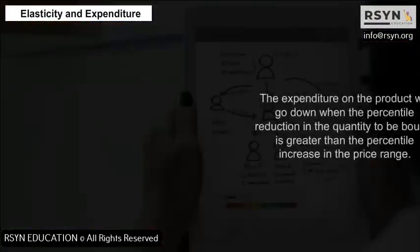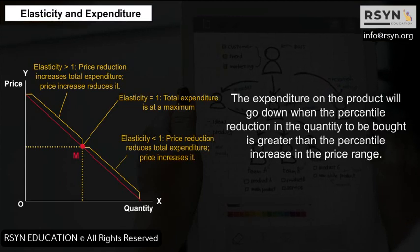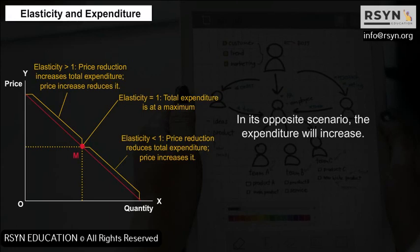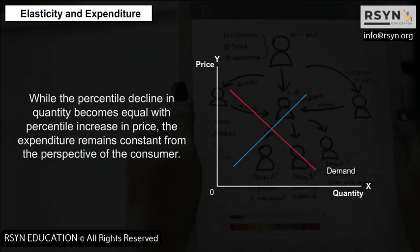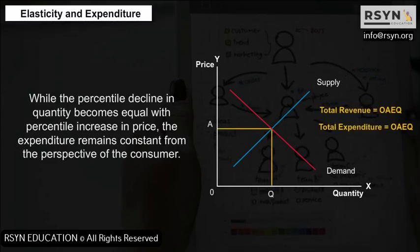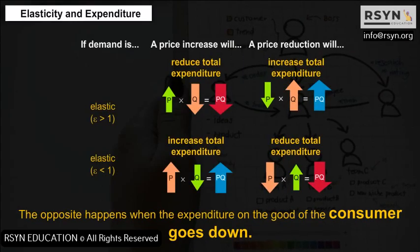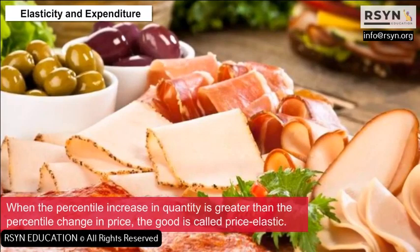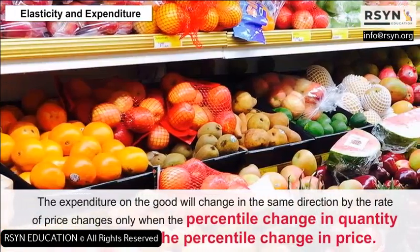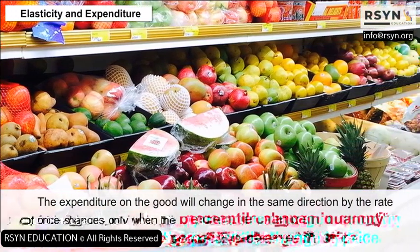Elasticity and Expenditure: Expenditure on a product will go down when the percentage reduction in quantity bought is greater than the percentage increase in price. In the opposite scenario, the expenditure will increase. When the percentage decline in quantity equals the percentage increase in price, expenditure remains constant. When the percentage increase in quantity is greater than the percentage decrease in price, expenditure grows. The opposite happens when the percentage increase in quantity is less than the percentage change in price.